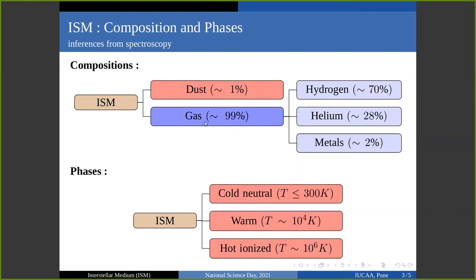Of the gas in the ISM, by mass 70% is hydrogen, 20% is helium, and 2% is in elements heavier than hydrogen or helium, known as metals.